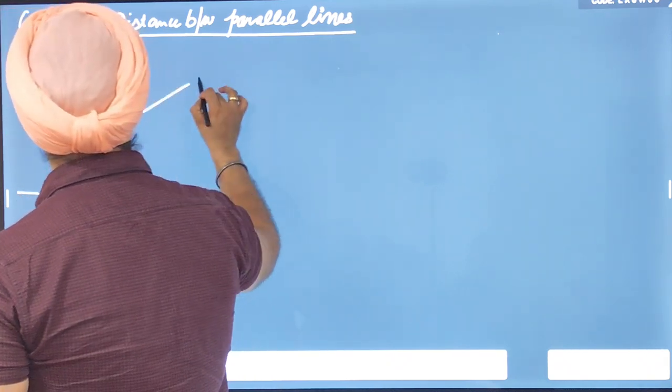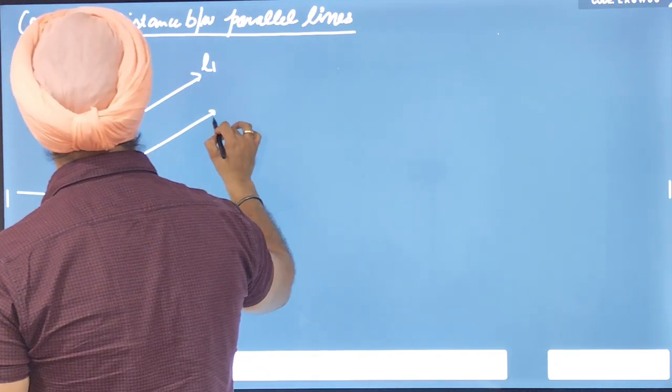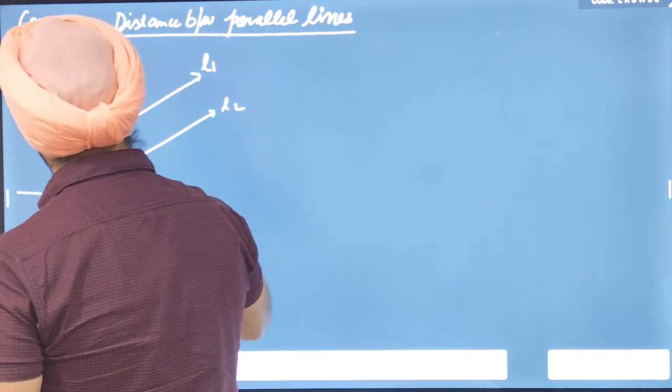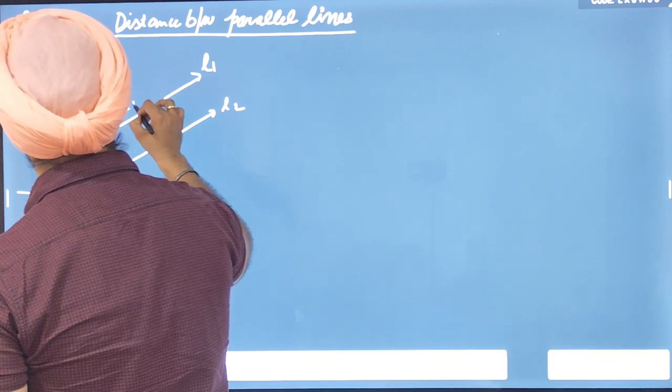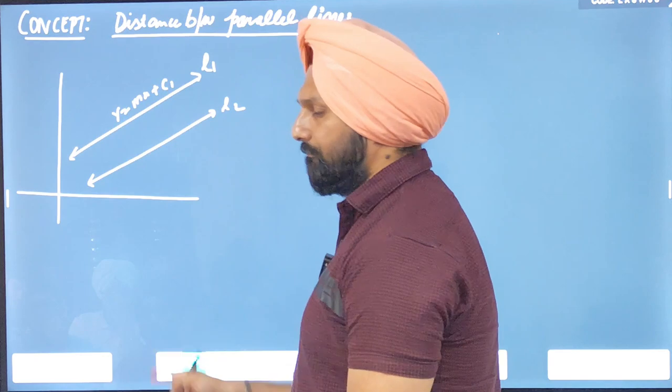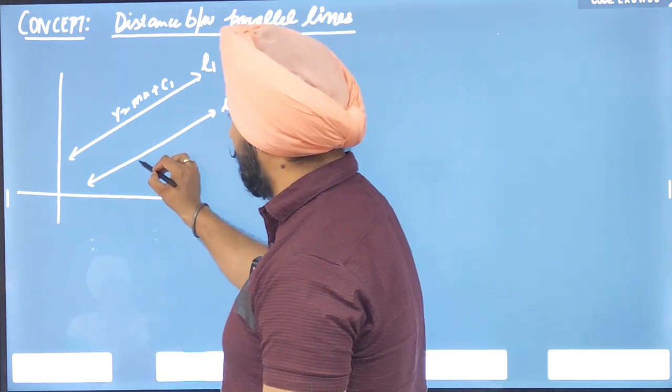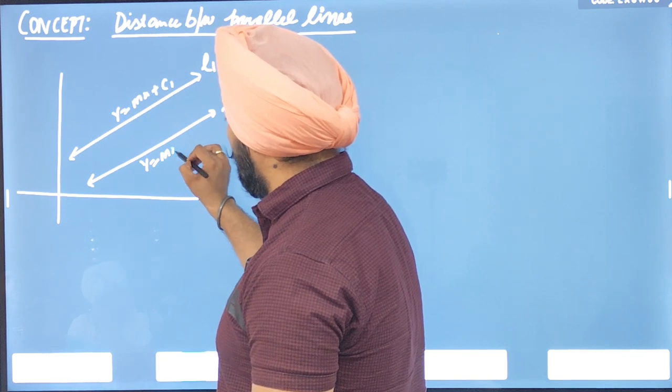And this line is L1 and this line is L2. L1 is equal to mx plus c1, L2 is equal to mx plus c2.